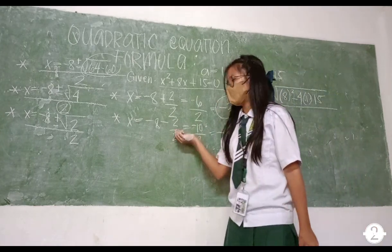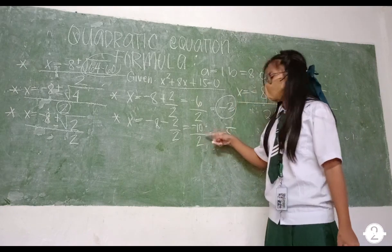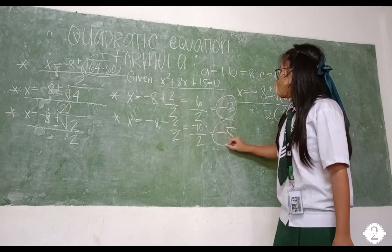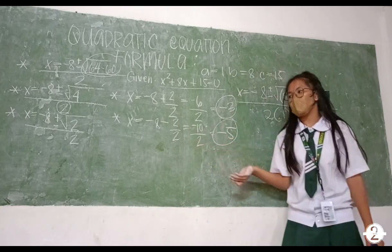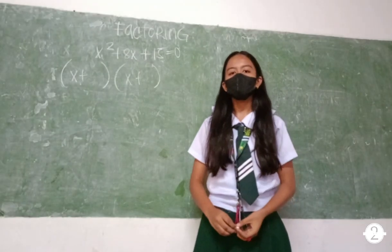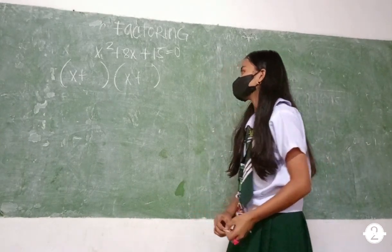Copy mo lang ulit, hindi naman for which is number 2. Ngayon ipag-divide mo naman yung dalawa. So negative 10 over 2 is equals negative 5. Ayun ang nangyari, kaya nakuha natin yung sagot na negative 5. Ngayon masasabutin na natin ang quadratic formula na given na x² + 8x + 15 = 0.